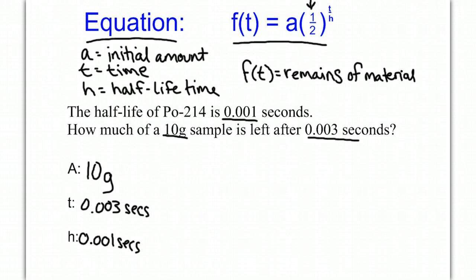Then we simply plug those into our formula, our equation. So f(t), in this case t is 0.003, is going to equal our a, which is 10, times one-half raised to our t.